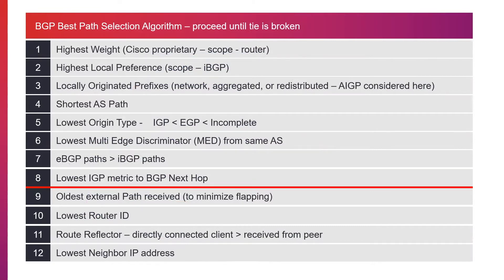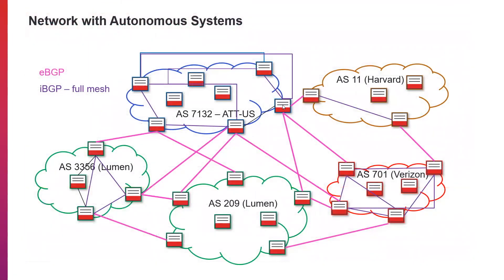Say this router is learning routes from two different ASs, and for some business reason AT&T wants to prefer routes learned from Verizon over routes learned from Lumen. It will configure a higher weight on routes learned from AS 701, the Verizon router, than for routes learned from the Lumen router. That way, if it learns the same route from both routers, it will send the traffic through the Verizon network. This is only local to this router — it is not shared with any other routers in the administrative domain. It's a local parameter.